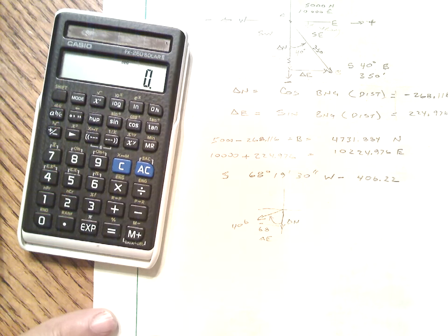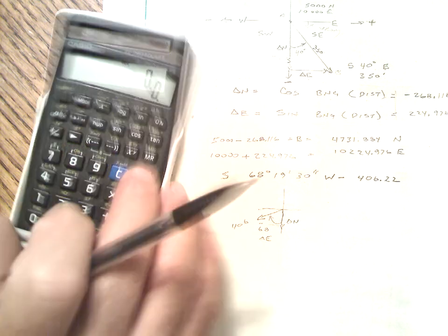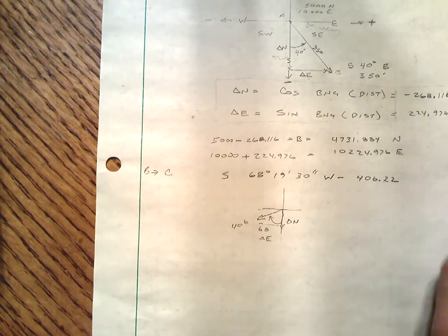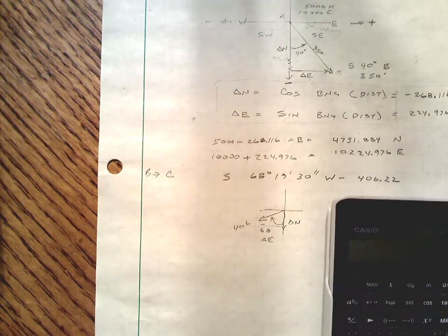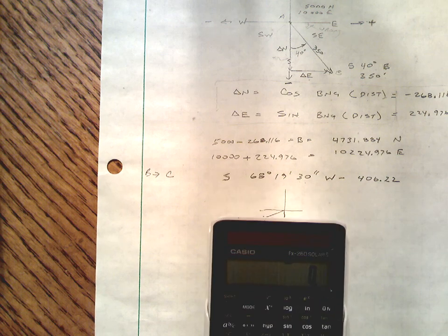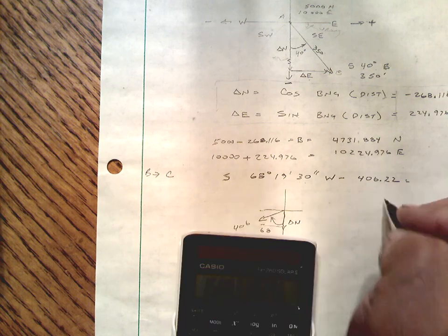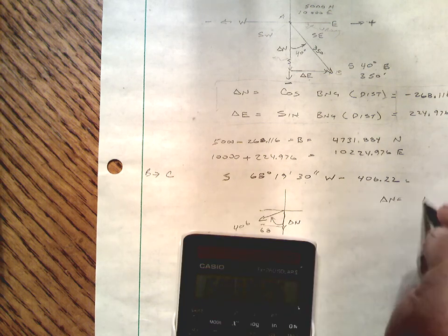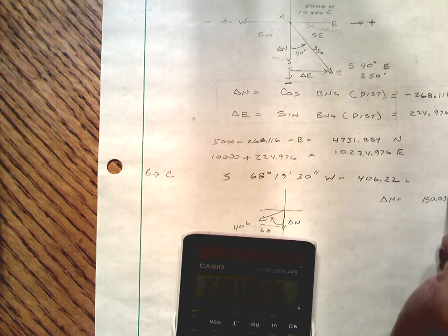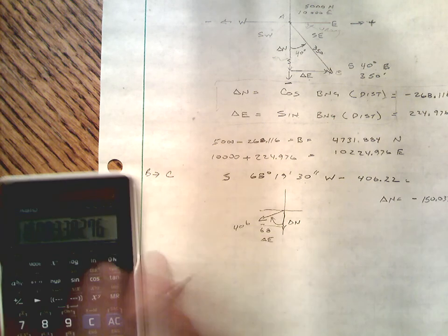So again, we can just kind of use these equations to get what we need. So we can simply take then cosine of 68 degrees 19 minutes and 30 seconds, multiply it by 406.22, and we come up with 150.033, and again, we have to know that we're going south and we put the negative in.